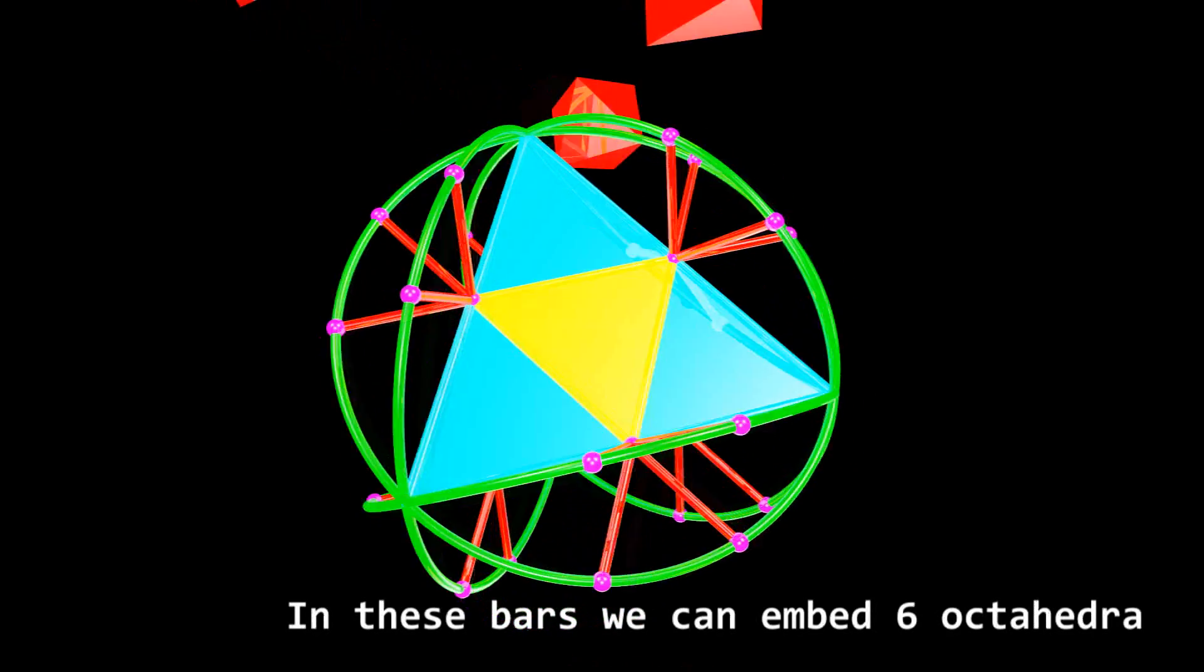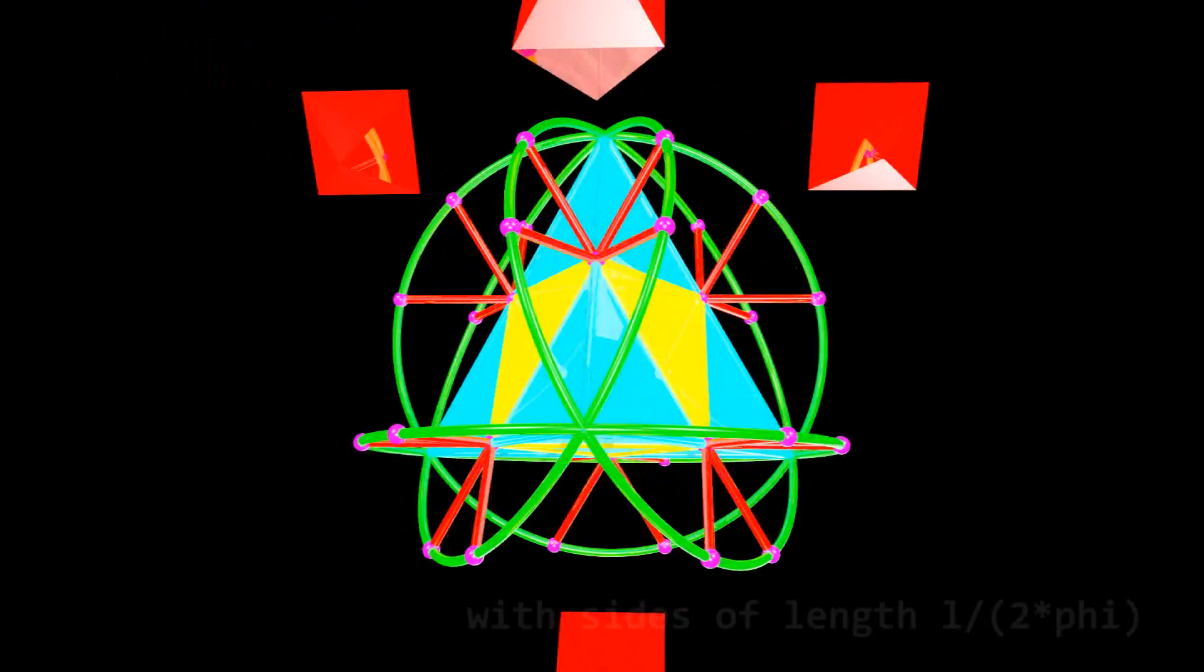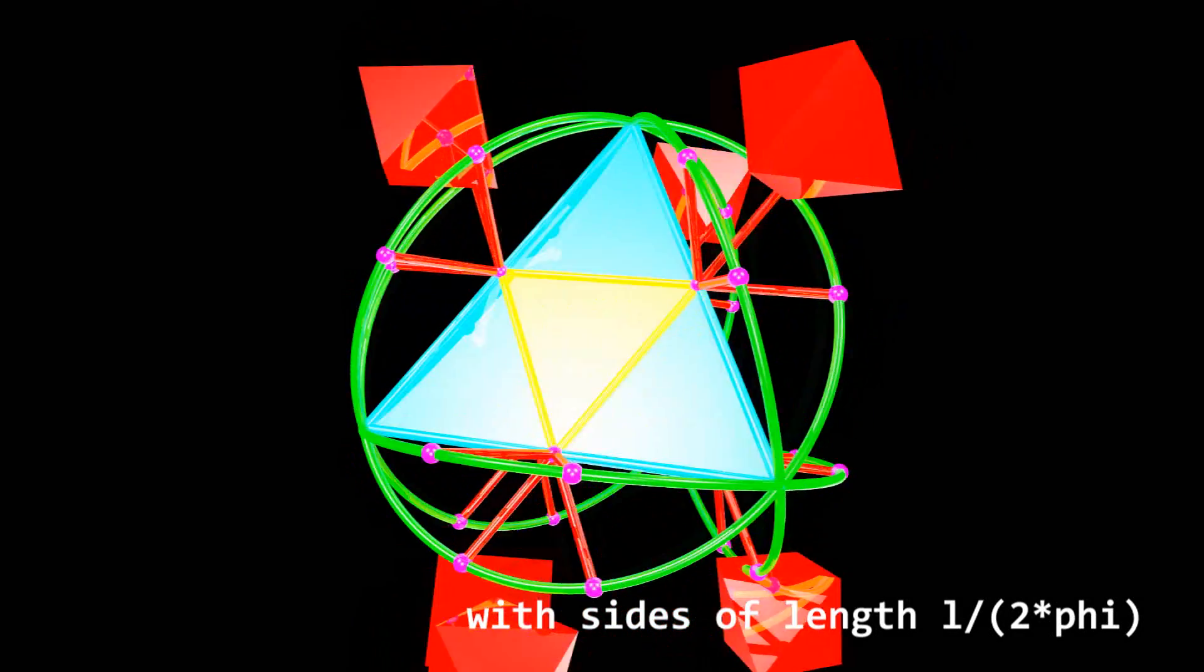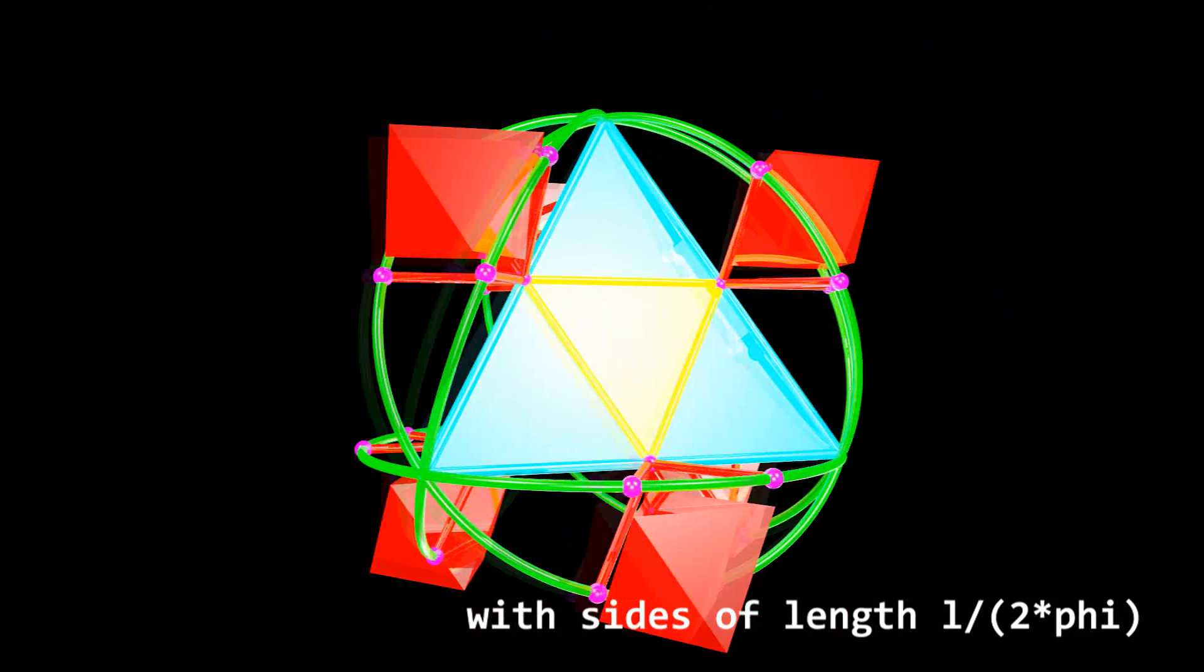In this part, we can embed six octahedra with six slots of length one divided by two multiplied by phi.